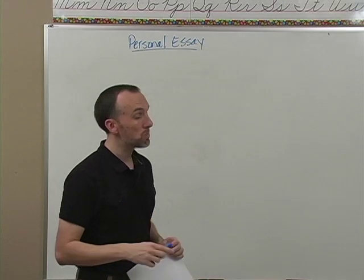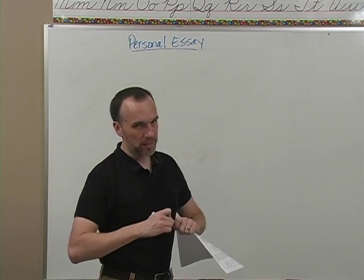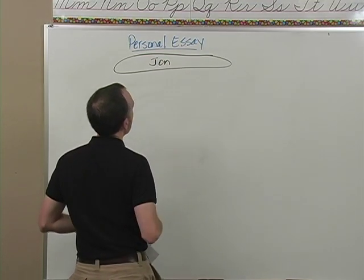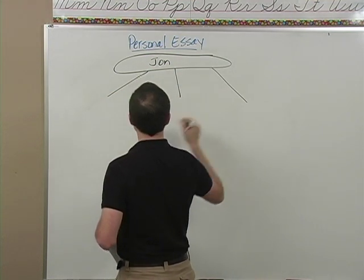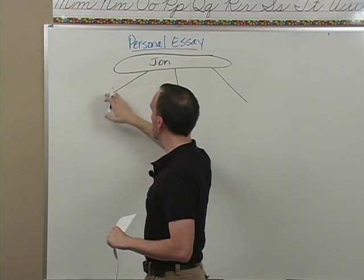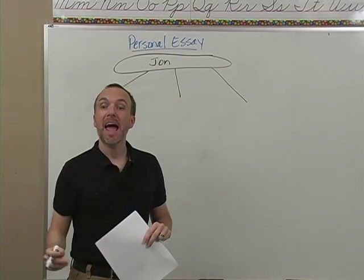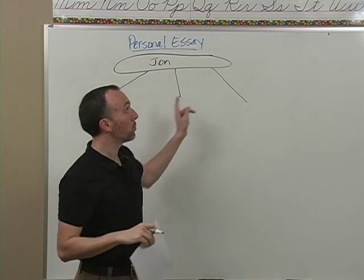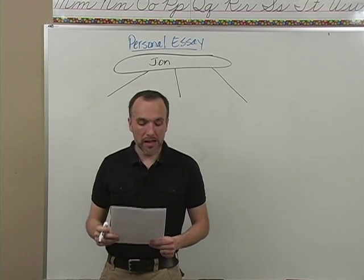The first thing I need to do is make a plan. I'll make a bubble or spider plan — whatever you want to call it — and put the person I've chosen in the center. That person is John. From there, I'm going to list the things about John that I think have really impacted my life. I can put as many stems out here as I want and then choose the best three — that's actually the best way, unless I already have it in my head.